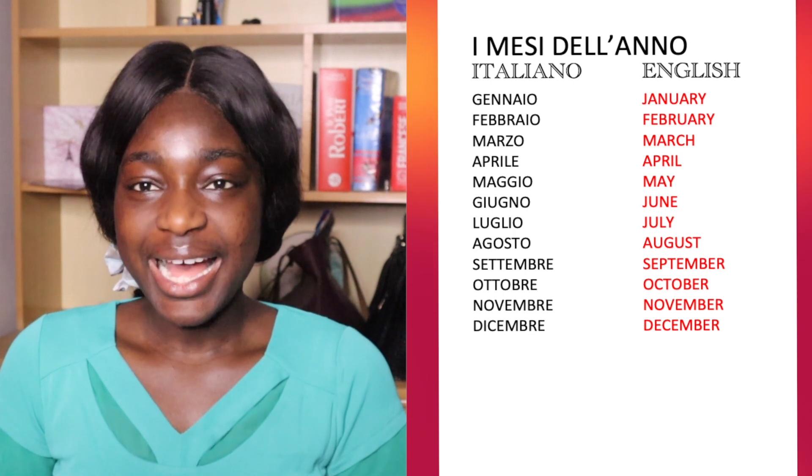Now the months of the year — 'i mesi dell'anno.' Gennaio, febbraio, marzo, aprile, maggio, giugno, luglio, agosto, settembre, ottobre, novembre, dicembre. It sounds difficult and complicated, but now slowly we're going to learn them. Slowly — January: gennaio.